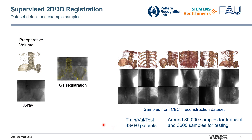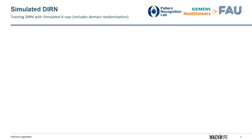When we have access to paired annotated datasets to train supervised registration networks, they achieve state-of-the-art results. However, it is not trivial to always obtain such paired annotated datasets for different clinical use cases and interventions. To circumvent the need for paired annotated datasets,